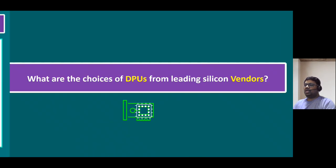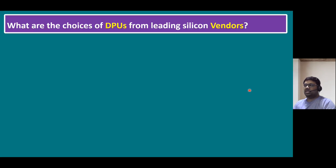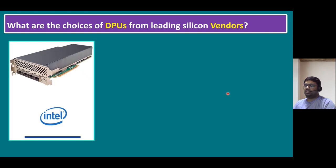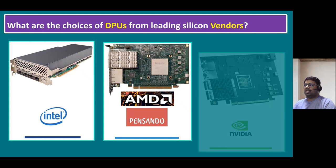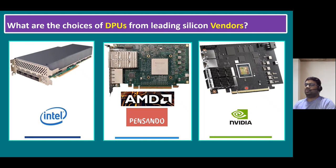The choices of DPUs from leading silicon vendors: there are three options — Intel DPU, AMD Pensando DPU, and NVIDIA DPU. Based on customer preference, you can choose the respective silicon vendor. Pensando was originally a separate company but was recently acquired by AMD, so now Pensando is part of AMD. The most popular DPU silicon vendors are Intel, AMD, and NVIDIA.